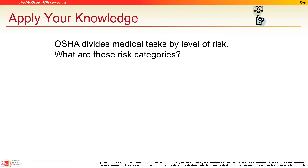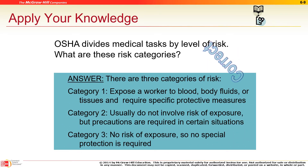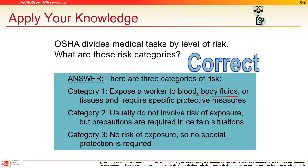OSHA divides medical tasks by levels of risk. What are the three risk levels? Level one is high risk — PPEs always required. Level two — PPEs required some of the time but not all the time. Level three — nothing is required. For example, when a doctor palpates your abdomen, they sometimes don't wear gloves.